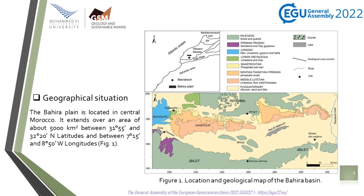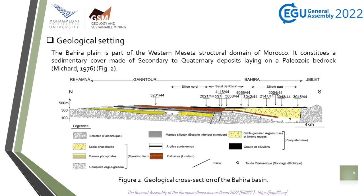The Bahia plain is located in central Morocco. It extends over an area of about 5,000 km² between 31°55' and 32°20' north latitudes and between 7°15' and 8°50' west longitudes. The Bahia Basin is part of the western Meseta structural domain of Morocco. From a geological point of view, it constitutes a sedimentary cover made of secondary to quaternary deposits lying on a Paleozoic basement.